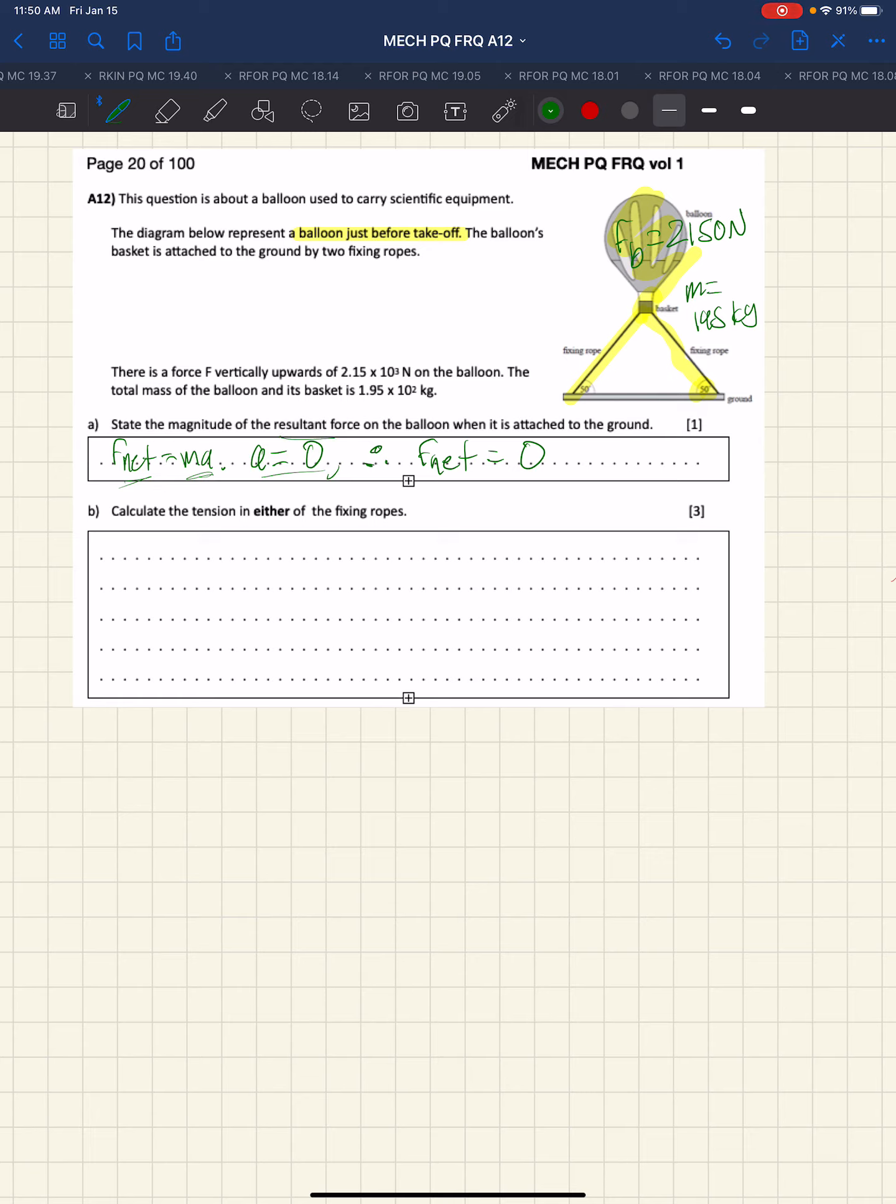Next we are asked to determine the tension in either of the fixing ropes, and that's bolded because we only need to find one. So let's start with a free body diagram.